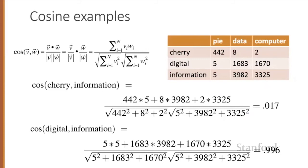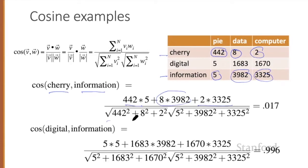Let's see how the cosine computes which of the words cherry or digital is closer in meaning to information, just using raw counts from the shortened table. To compute the cosine between cherry and information, we take the dot product between these two vectors: four hundred forty-two times five, plus eight times thirty-nine eighty-two, plus two times three thousand three hundred twenty-five in the numerator. In the denominator, we have the lengths of the two vectors — first the length of cherry, which is the square root of four hundred forty-two squared plus eight squared plus two squared.